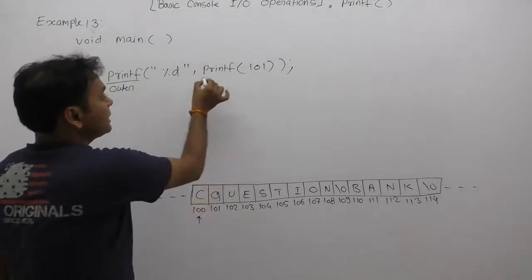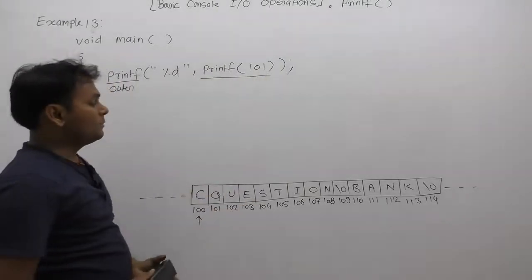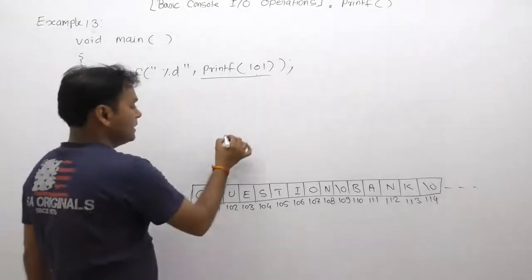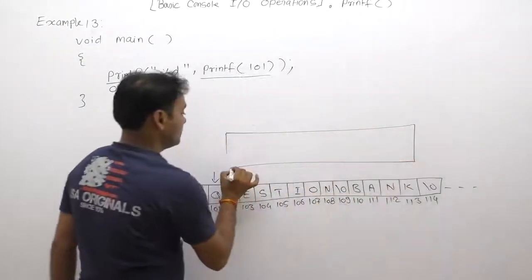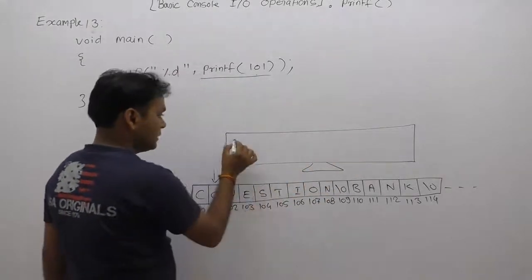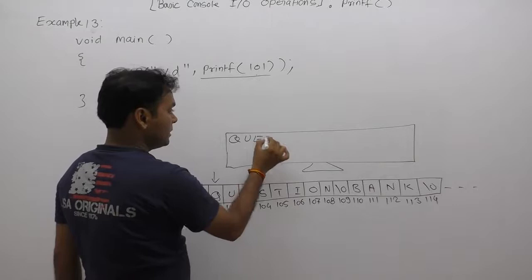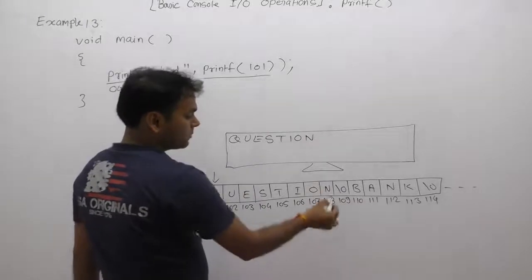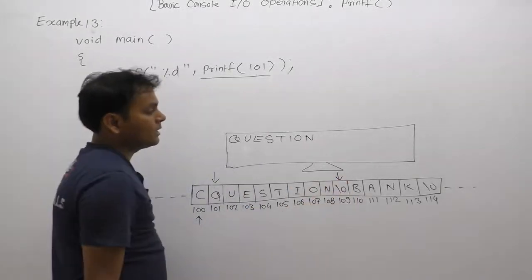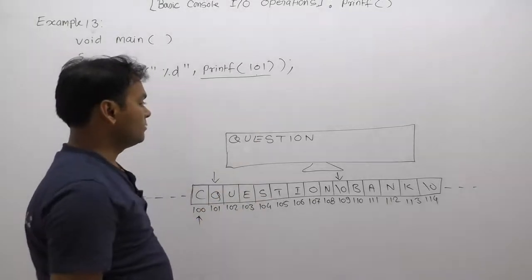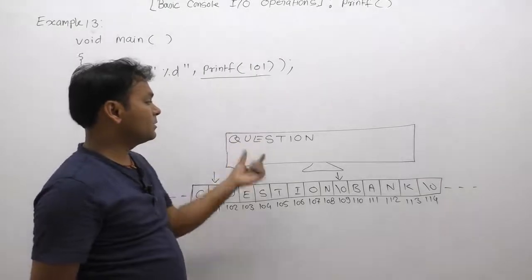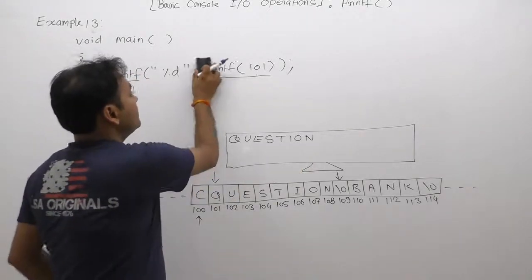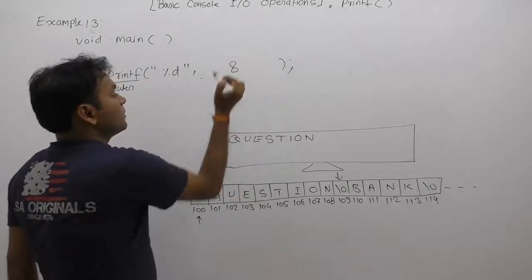First, we are executing the inner printf. The inner printf will start displaying data from the 101 location onwards. It will traverse the bytes and display the characters: C-Q-U-E-S-T-I-O-N. Therefore, it displays 8 characters and returns 8. The printf function simply works by displaying a message on the monitor and returning the number of displayed symbols.